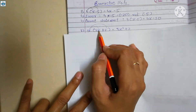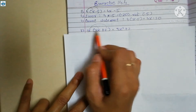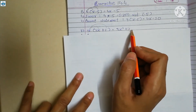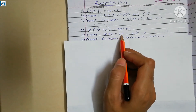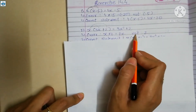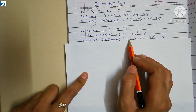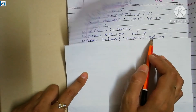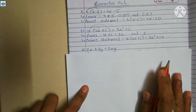Now correcting the error: 3x into x gives x square, so here is 3x square. Then 2 into x gives 2x, but here the number 2 is written instead. So the error is x into 2 equals 2x, not just the number 2. The correct statement is: x in bracket 3x plus 2 equals to 3x square plus 2x.